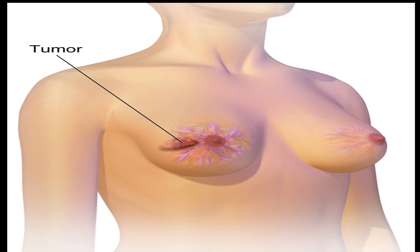Cancer is a complex and diverse group of diseases characterized by the uncontrolled growth and spread of abnormal cells in the body. It's important to understand that there isn't just one type of cancer, but rather numerous types that can affect different organs and systems within the body. Let's start by discussing some of the most common types of cancer that you may have heard about.